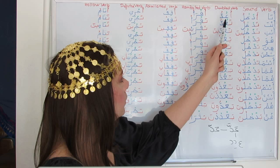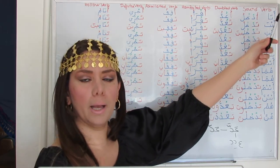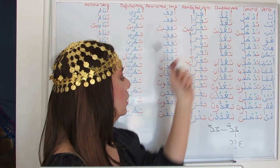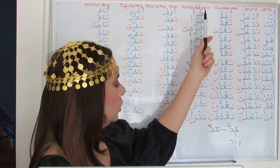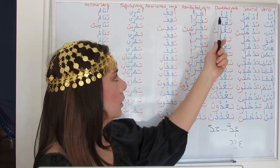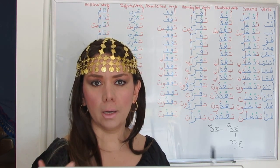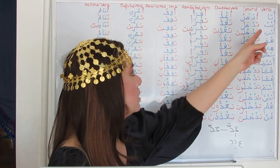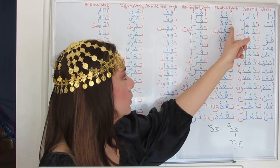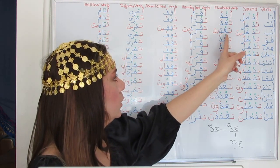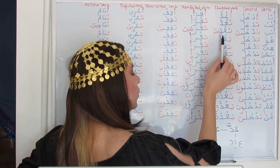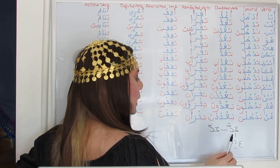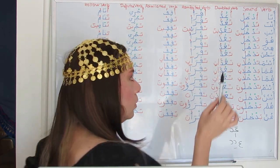For this stem 'adda,' we prefix it with the Hamza from 'ana': ana a'uddu. We have a Dhamma on the first radical and Shaddah (doubling) on the last doubled radical for the indicative mood. Ana a'uddu — I am counting or I count. Anta ta'uddu — with prefix 'ta.' Anti ta'uddina — same prefix with the suffix 'ina,' preceded by Kasra on the last radical, because it is followed by a long vowel Ya.